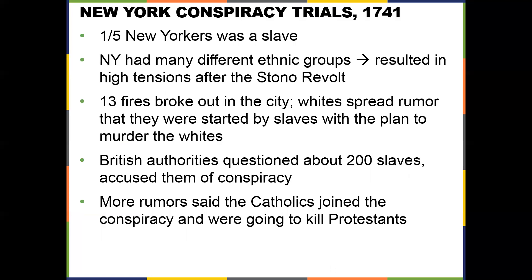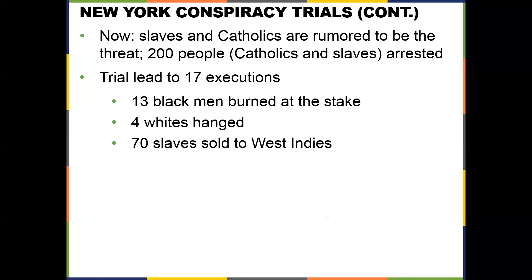News of the Stono Rebellion eventually reached New York, and by 1741 a conspiracy theory took hold there. One night, 13 fires broke out across the city, and whites spread rumors that slaves planned to murder them; others claimed Catholics were involved. This led to the arrest of about 200 people — Catholics and slaves. Seventeen were executed: 13 Black men were burned at the stake, four white Catholics were hanged, and 70 slaves were sold back to the West Indies.